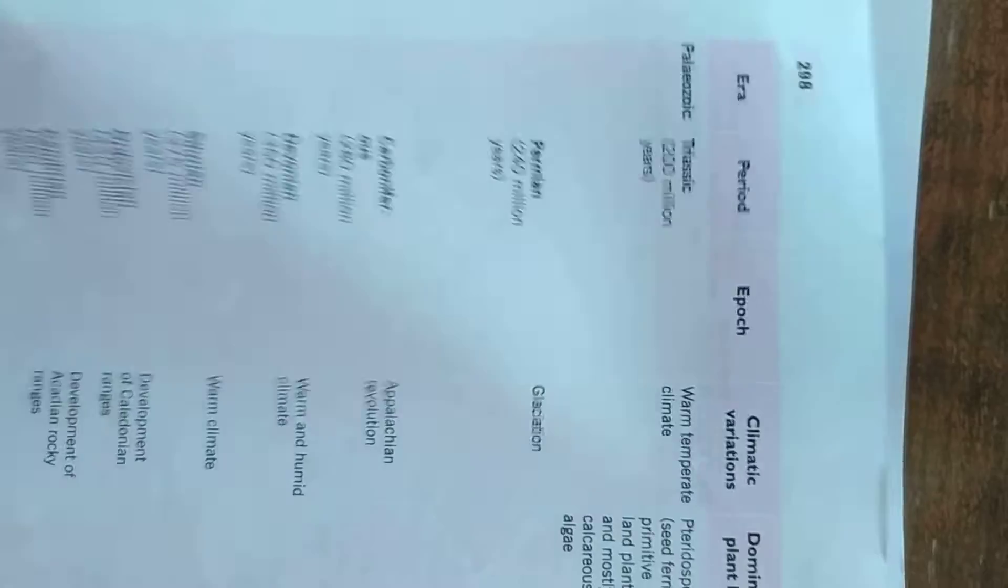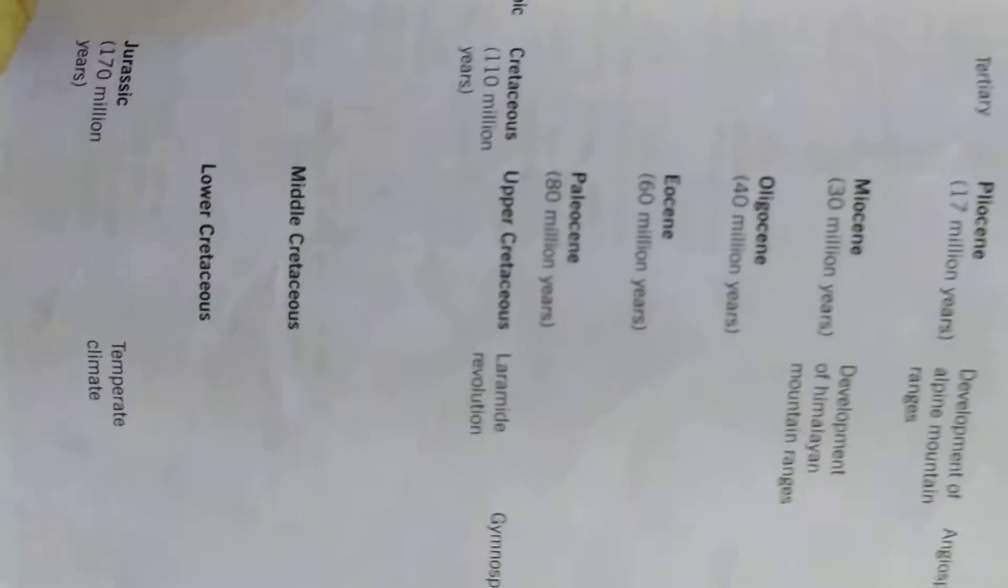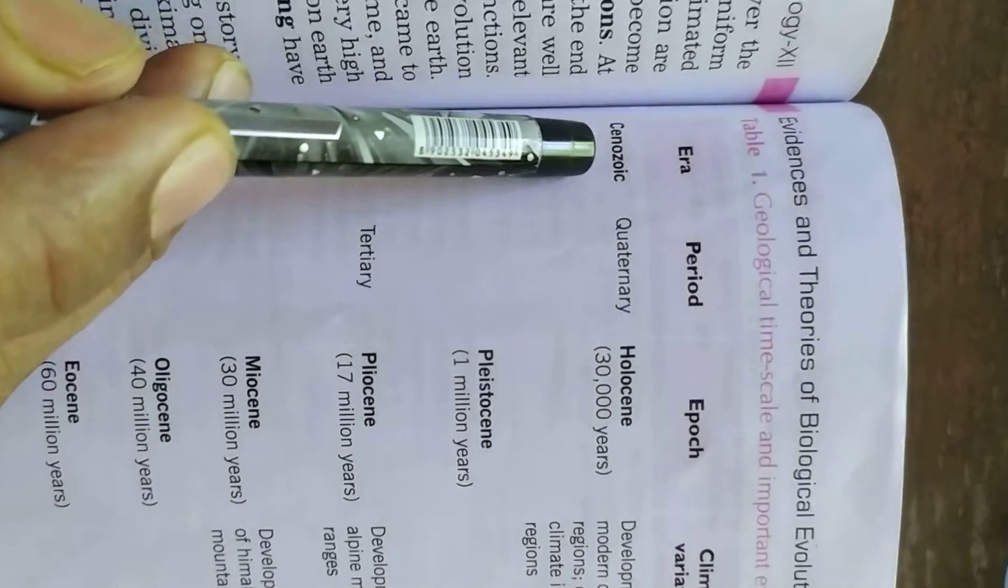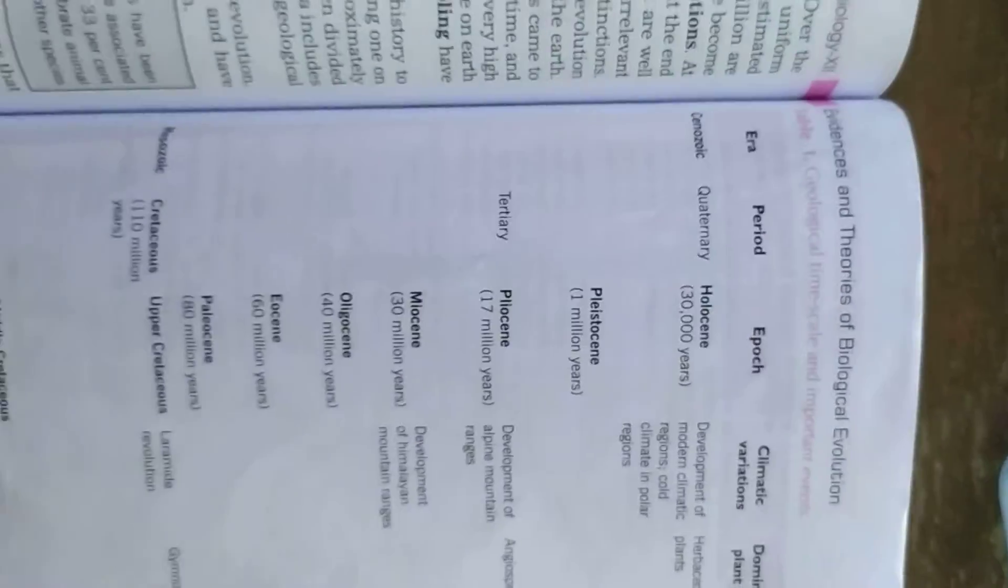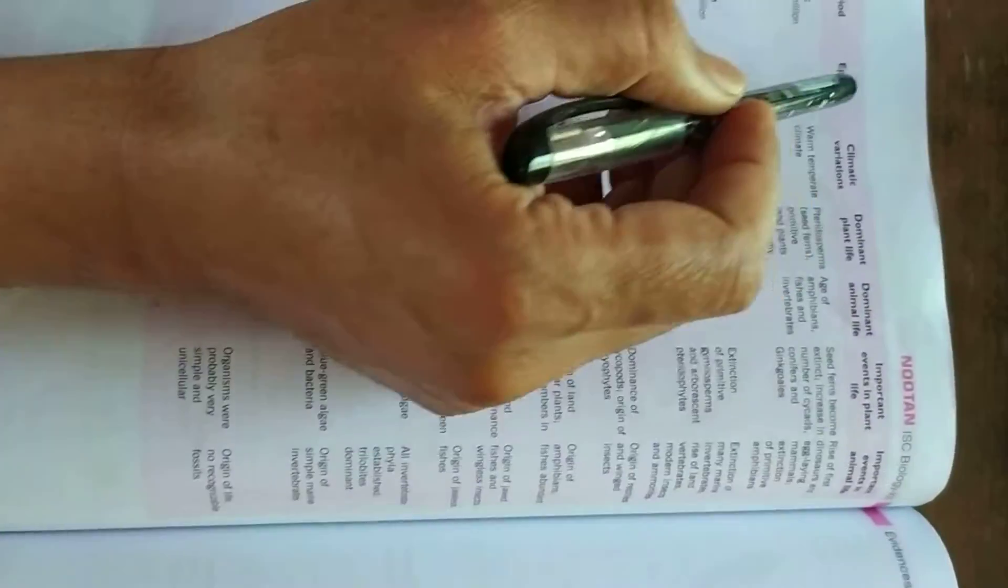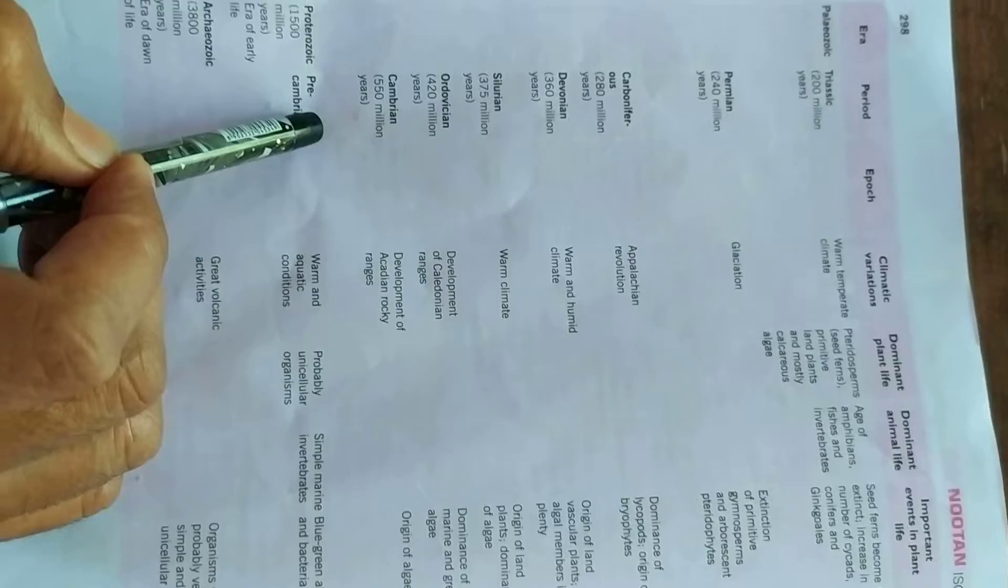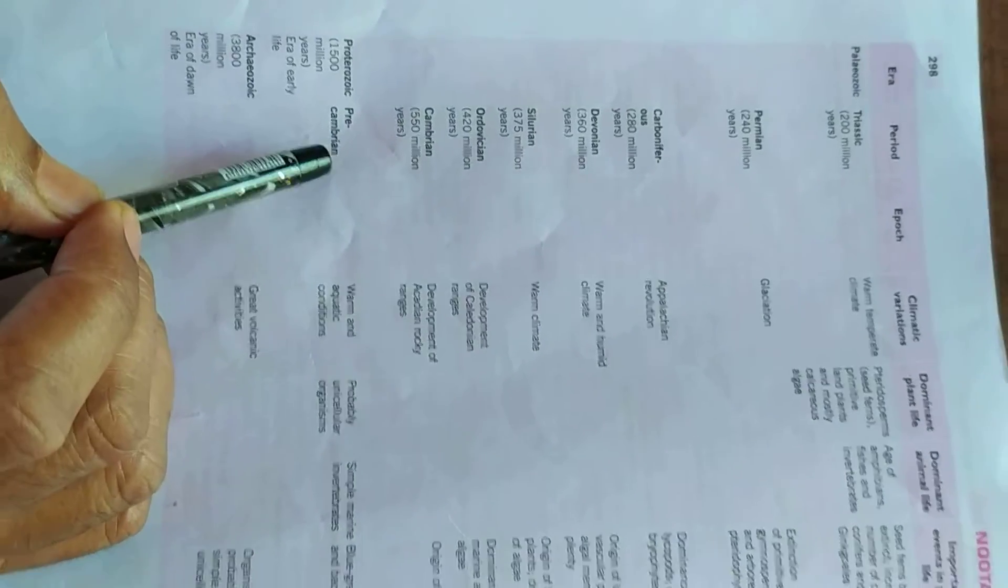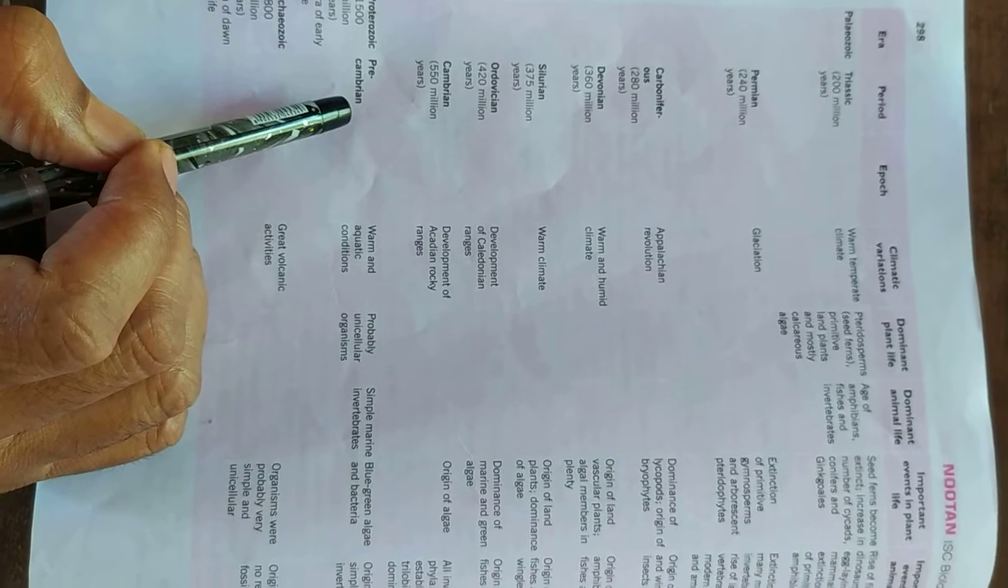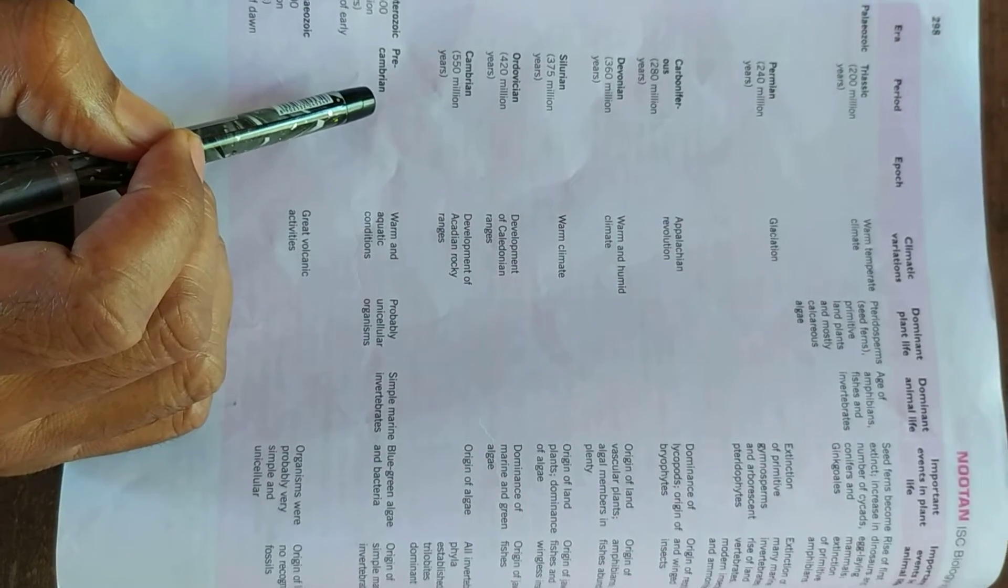Paleozoic, Mesozoic and Cenozoic. Each era includes several periods. Each period is further divided into epochs.